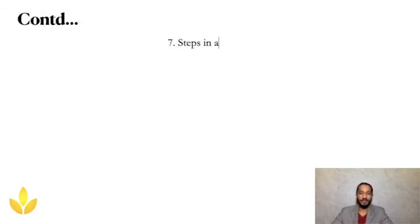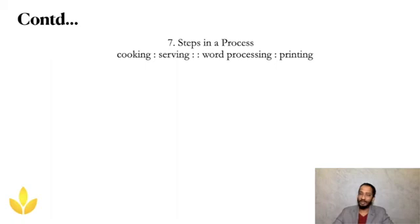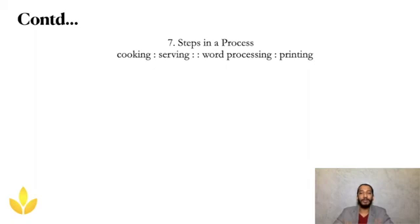Steps in a process — you don't jump from step one to step five; you go through steps one, two, three, four, five in order. In a process, you cannot serve food without cooking first. Similarly, without processing your words, you cannot print them. Cooking is to serving as word processing is to printing — you need to prepare really well before you give it to others. Without me processing every single slide, you wouldn't have this good presentation on screen.